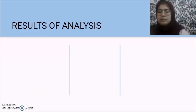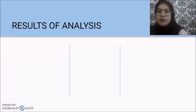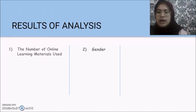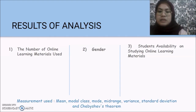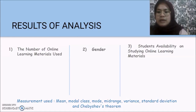My name is Annie Shakira and I will talk about the results of analysis. We use three independent variables as evidence in answering the problem: the relationship between online learning materials such as online quizzes and lectures, and GPA for IIUM students. The independent variables are: the number of online learning materials used, gender, and students' availability to study online learning materials. To prove or disprove our hypothesis, we used the mean, mode, mid-range, variance, standard deviation, and Chebyshev's theorem, as well as histograms and pie charts to graphically summarize the distribution of the dataset.